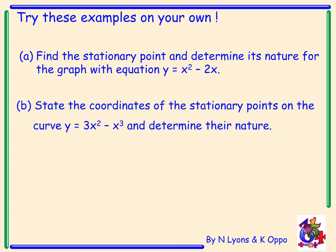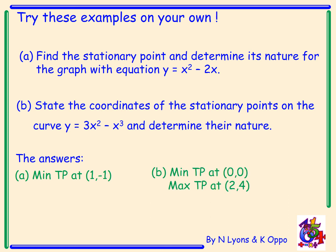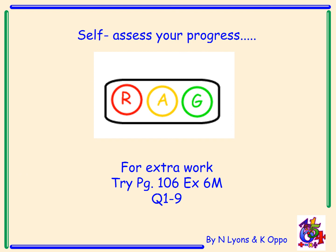Now try these examples on your own — please pause the video. The answers: for A we have a minimum turning point at (1, -1). We only have one turning point because we have a quadratic function. For B the minimum turning point is at (0, 0) and we have a maximum turning point at (2, 4). Please self-assess your progress. For extra work, try page 106 exercise 6M questions 1 to 9.